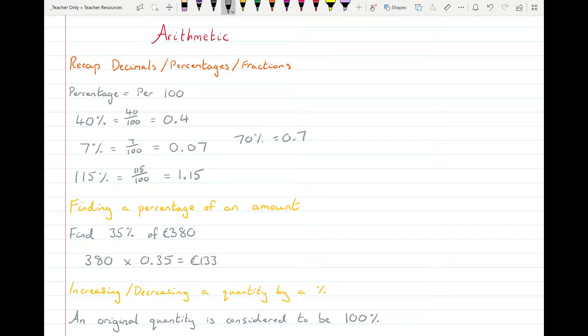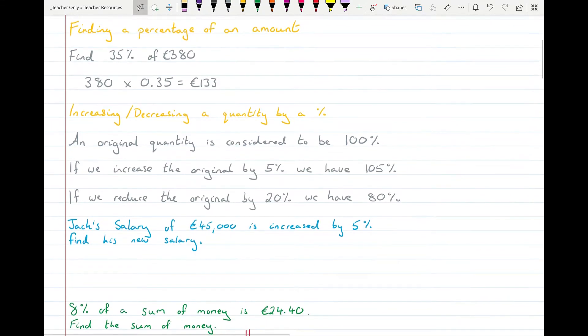Finding a percentage of an amount. So if you want to find 35% of 380, if you multiply 380 by 0.35 it'll give you 133. So if you convert the percentage into a decimal and multiply it, it's nearly the fastest way possible. You can use your calculator and put in the percentage sign, so just be careful that you're putting in 35 then the percentage button. You're not putting it in as a decimal with a percentage button because pick one system or the other.